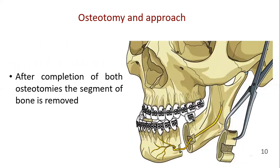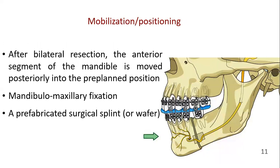After the anterior segment of both osteotomies, the segment of bone is removed. After bilateral resection, the anterior segment of the mandible is moved posteriorly into the pre-planned position. Mandibulomaxillary fixation is performed to position the mandibular segment to the desired relationship with the maxilla.